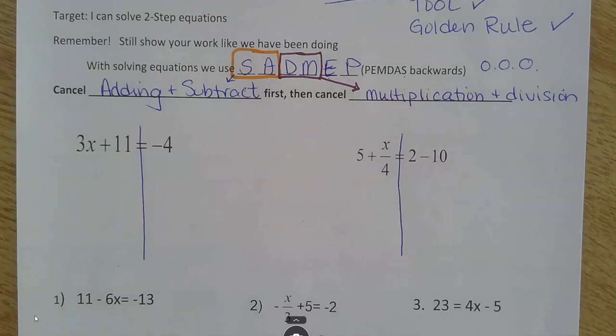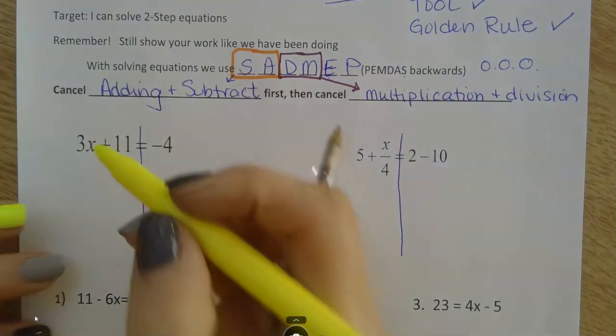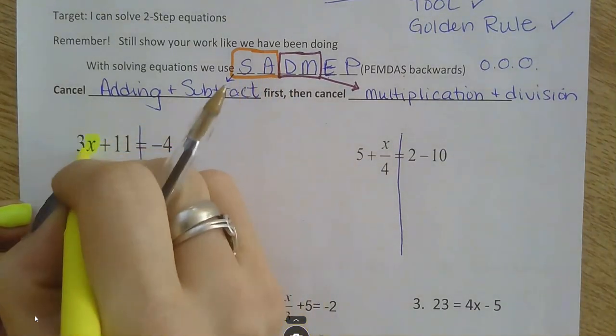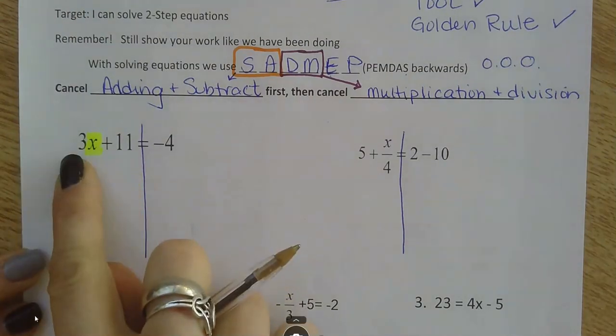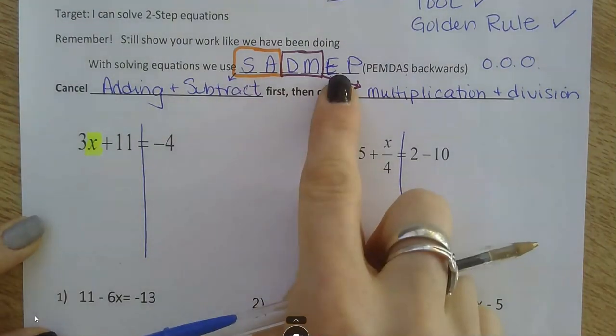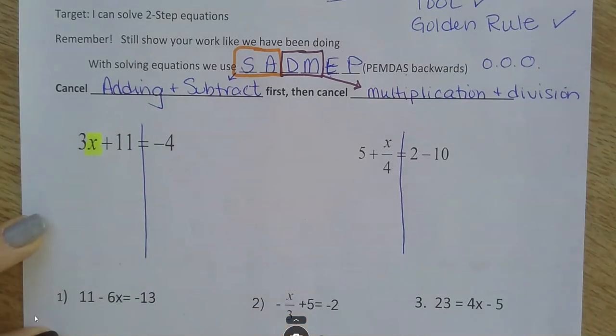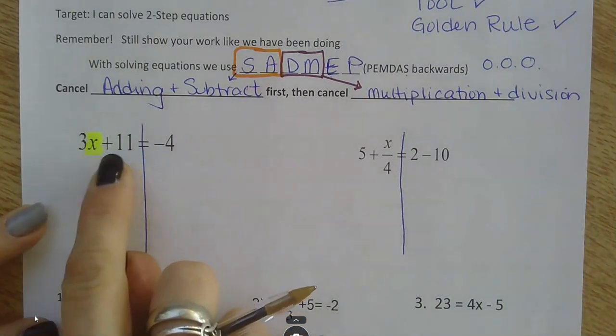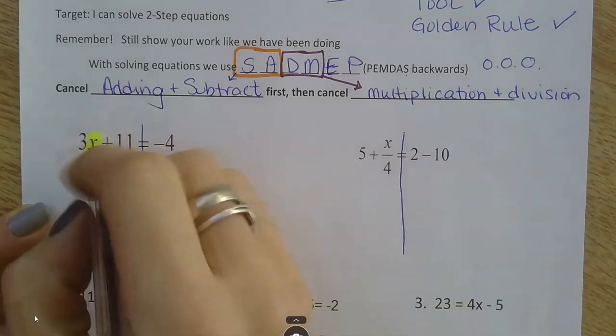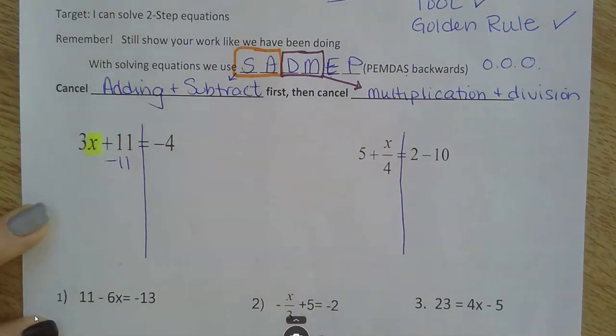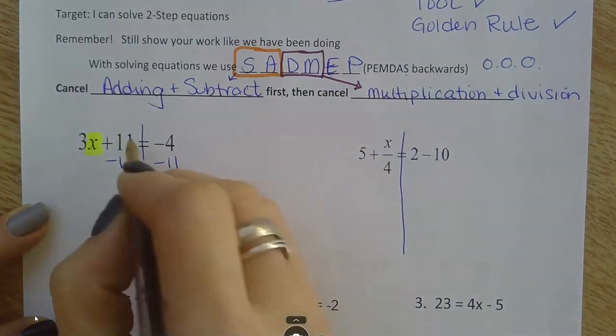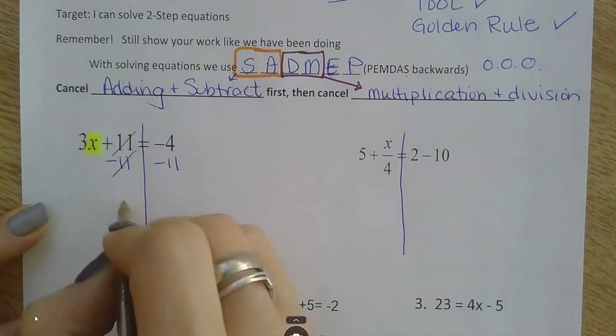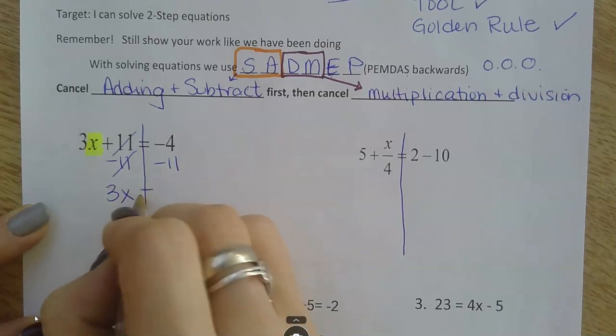So, let's do a few together. I'm going to still highlight my variable. This is what I'm trying to get by itself. So, we can see that I'm trying to cancel out an 11 and a 3. Well, if I follow SATMAP, I cancel all adding and subtracting first. That means this 11. So, to cancel out plus 11, I'm still going to use the inverse operation. Whatever I do on one side, I have to do on the other side. This cancels out. And, one step at a time, bring down what's left.